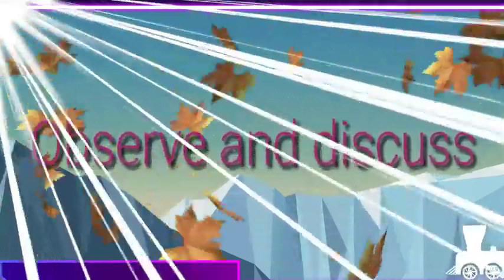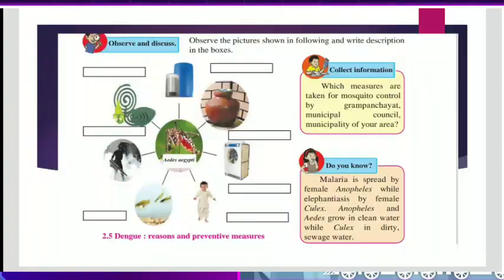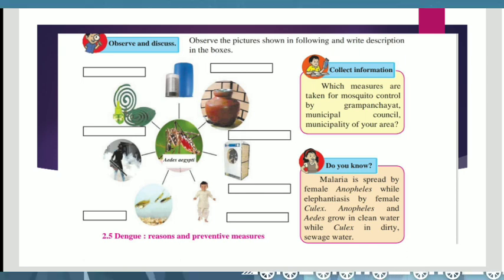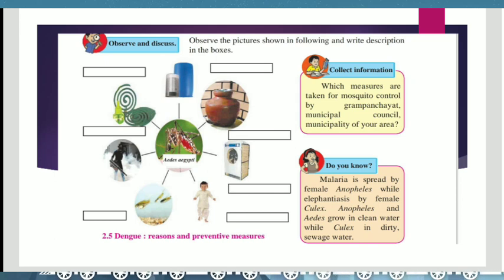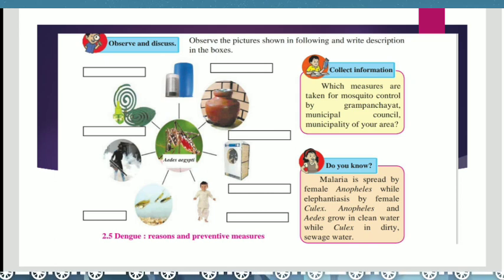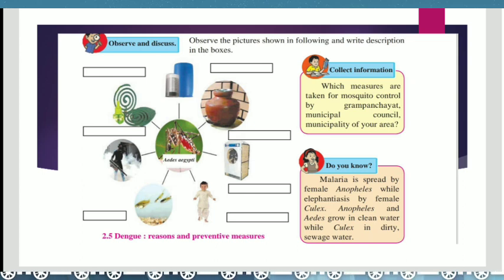Observe and discuss, students. Observe the pictures shown and write descriptions in the boxes. Collect information on which measures are taken for mosquito control by the gram panchayat, municipal council, and municipality of your area.